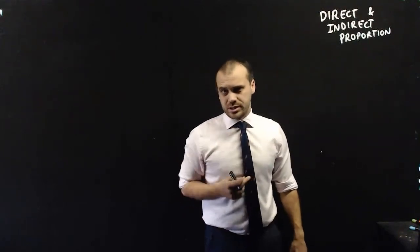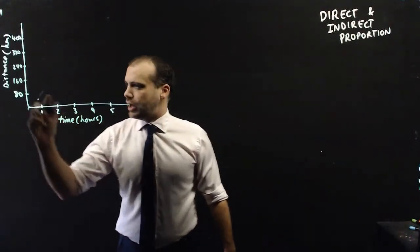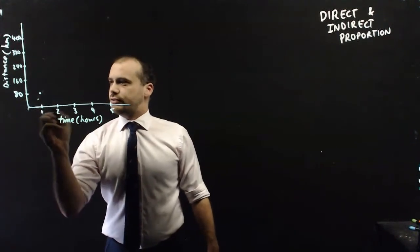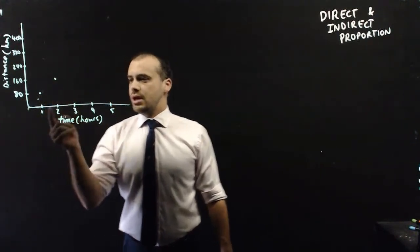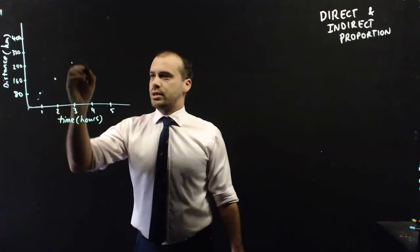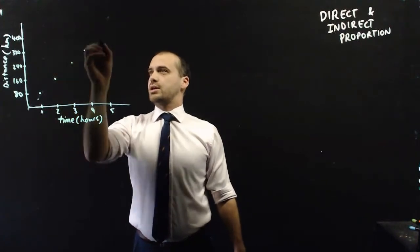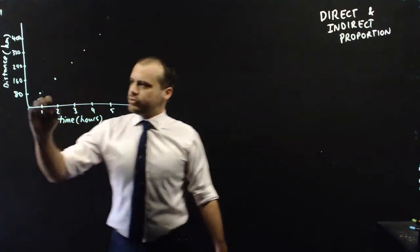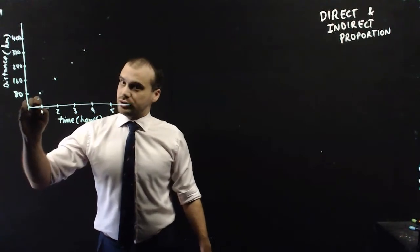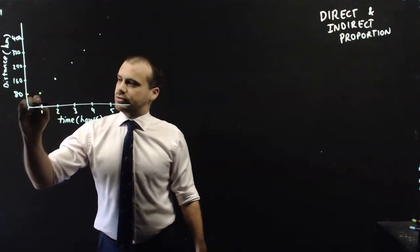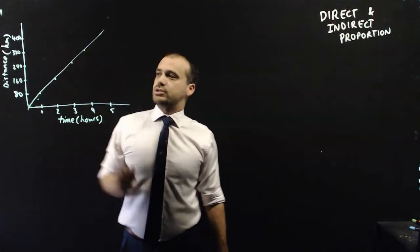Get in your car and drive at 80 kilometers an hour. Now, on this graph, after one hour, you've traveled 80 kilometers. After two hours, 160, and after three hours, 240, and four, 320, and five, 400. We can draw a straight line starting at the origin, because at time zero, you travel zero kilometers, and we get a nice straight line here.